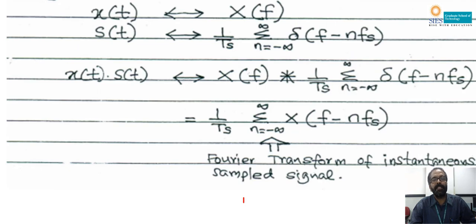Now I am proving the sampling theorem in the frequency domain. x(t) is the input signal and its Fourier transform is X(f). S(t) is the sampling signal — the periodic train of impulses — and its Fourier transform is (1/Ts)·Σ δ(f − nfs). Since x(t) and s(t) are multiplied in the time domain, multiplication in time domain is equivalent to convolution in the frequency domain. Therefore X(f) convolved with (1/Ts)·Σ δ(f − nfs) gives (1/Ts)·Σ X(f − nfs), which is the Fourier transform of the instantaneous sampled signal.